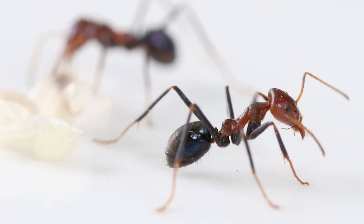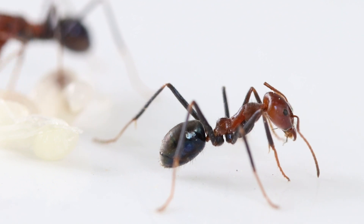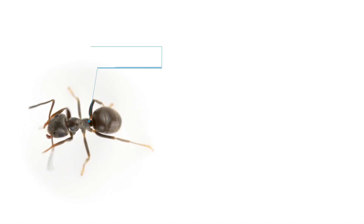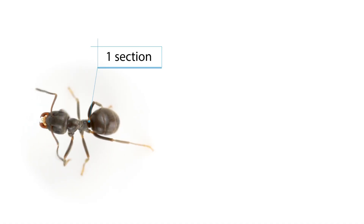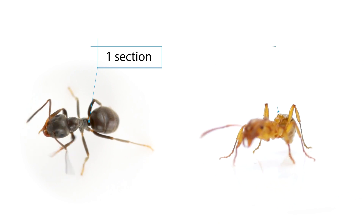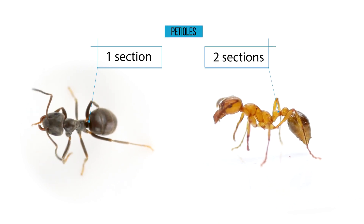Watching an ant from above, you'll notice how tiny her waist is. Some ant species have a one-section waist, others two sections. These sections are called petioles.